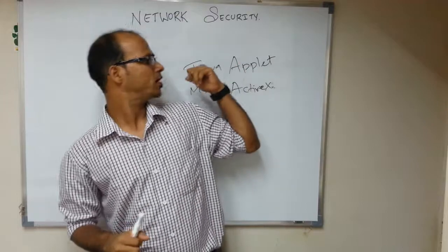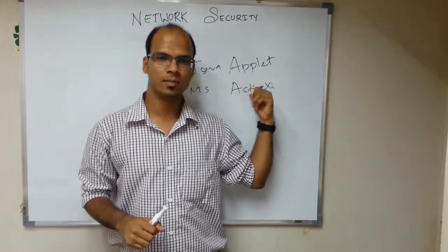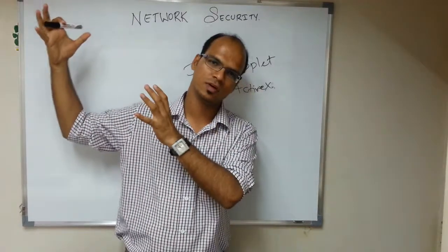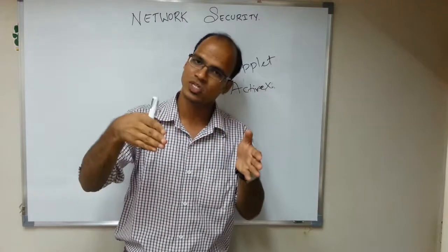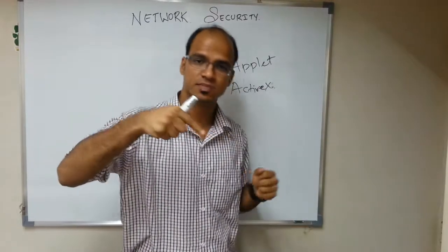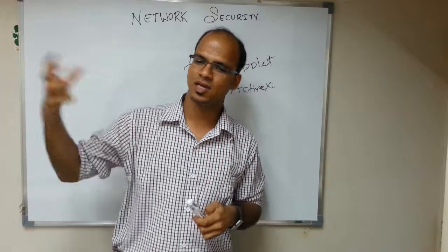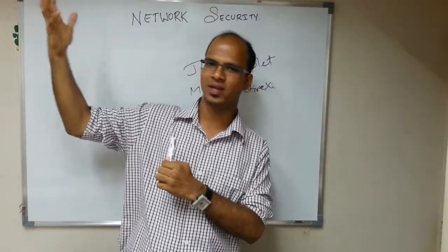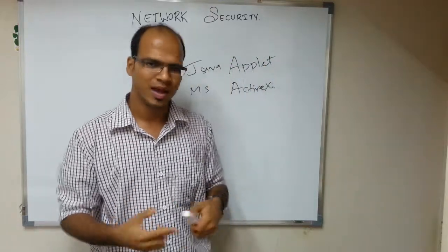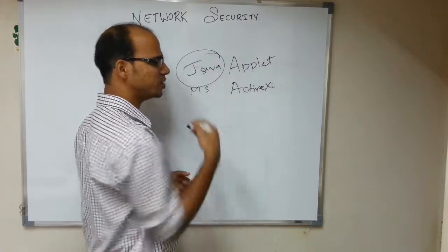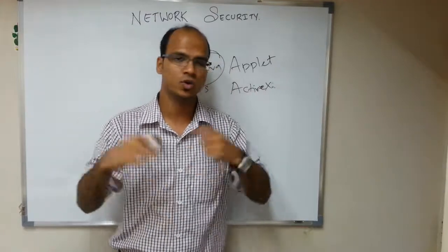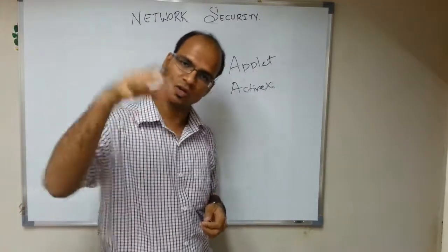So we have Java Applets and Microsoft ActiveX. The problem is, there is something on the server which gets downloaded and executes on your machine. An attacker can use these two things to attack your system — they can write malicious code in that software and when it executes on your system, it might affect it. Java has now provided security so that an Applet cannot access your system resources, but earlier it was open and your Applet could affect your system.